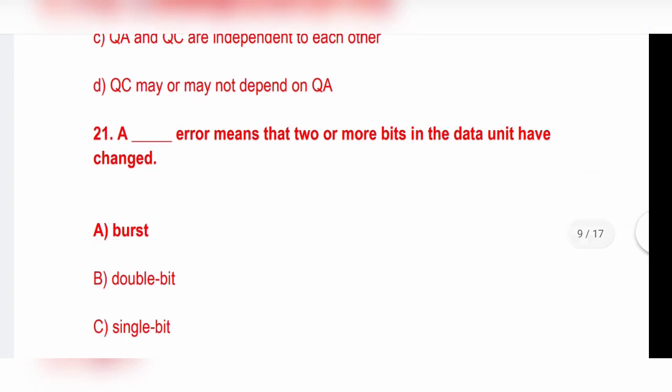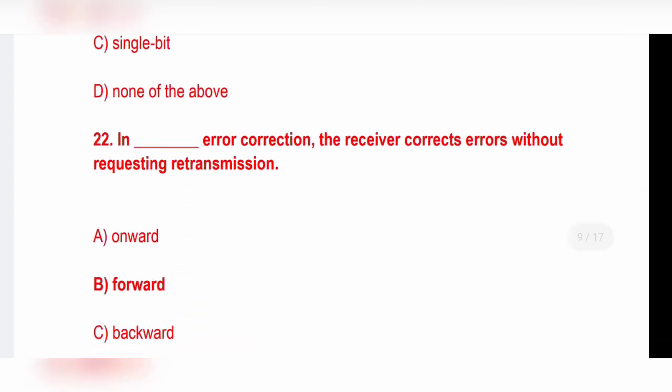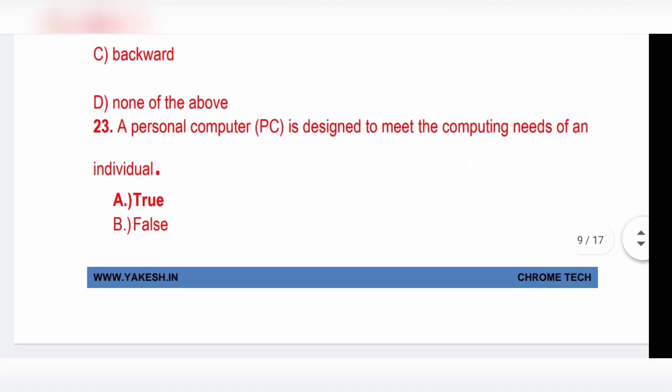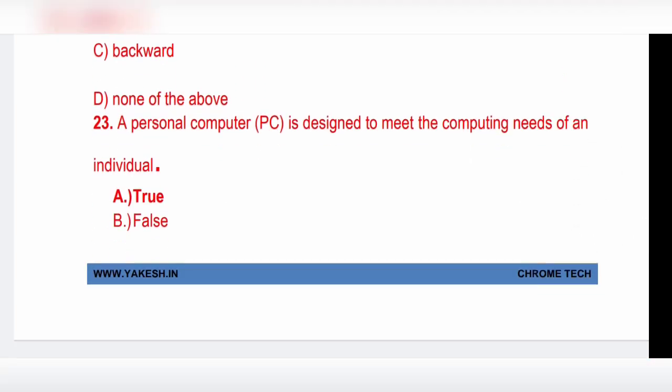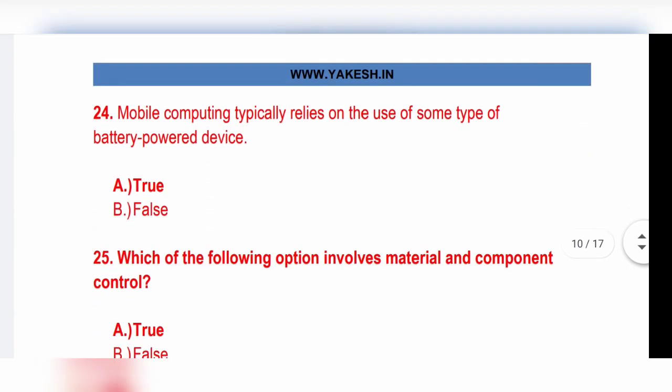Next question: Burst error means that two or more bits in the data unit have changed. Option A, burst is the correct answer. In forward error correction, the receiver corrects error without requesting retransmission. Option B, forward error correction, is the correct answer. A personal computer PC is designed to meet the computing needs of an individual. Option A, true is the correct answer. Mobile computing typically relies on the use of some type of battery power device. Option A, true is the correct answer.